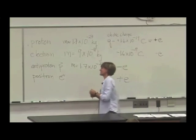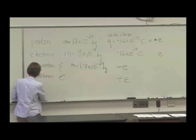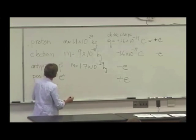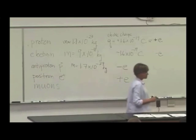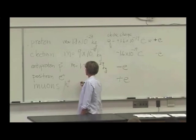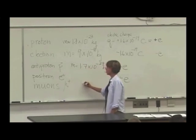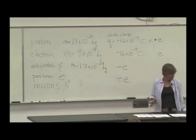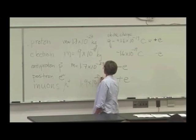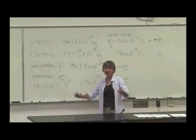And there are some other things like muons. These are kind of like heavy electrons. They have a mass that's a little bit larger than the electron. There's a mu plus. There's something like about 1.9 times 10 to the minus 28 kilograms. And there's also a mu minus.